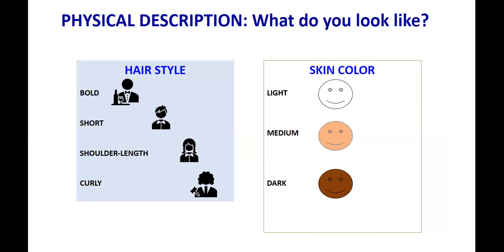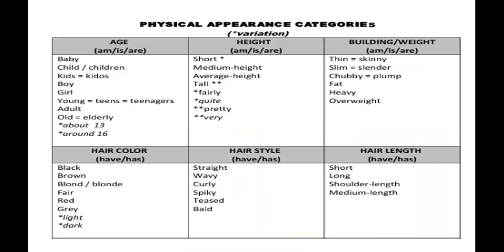What about the adjectives for describing hairstyle? You say bald, short, shoulder-length, or curly. To talk about skin color you say light, medium, or dark. Here we have some physical appearance categories.